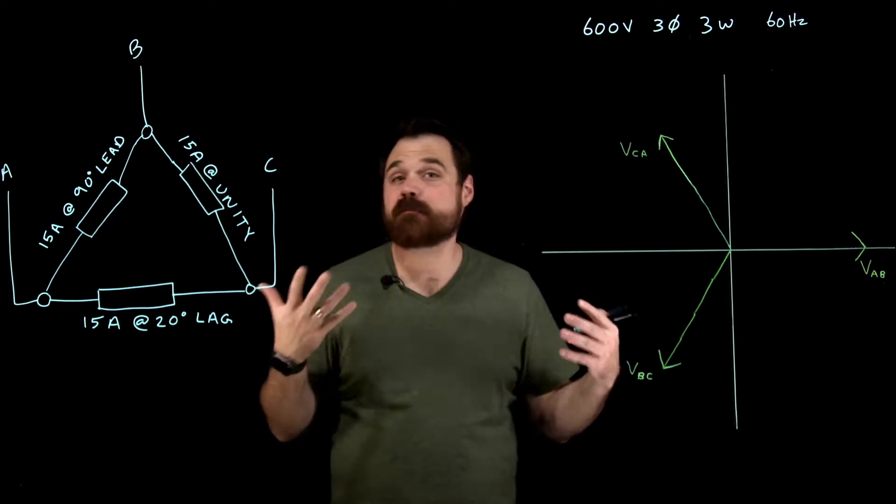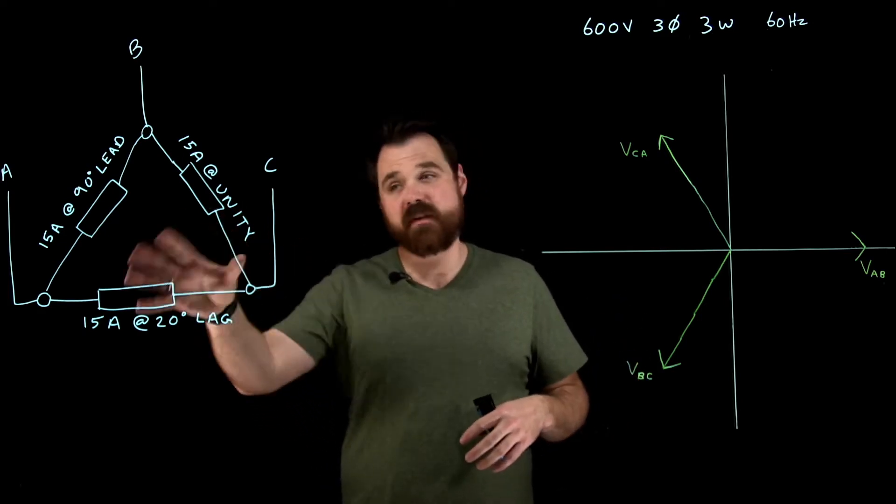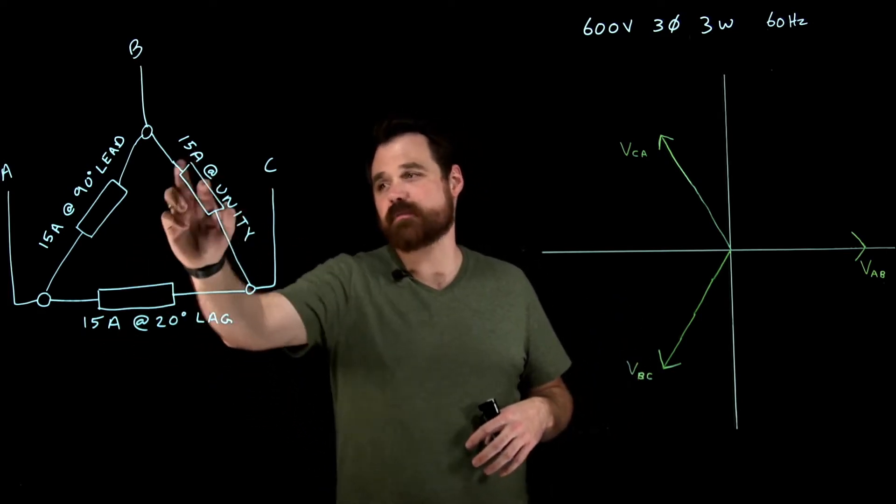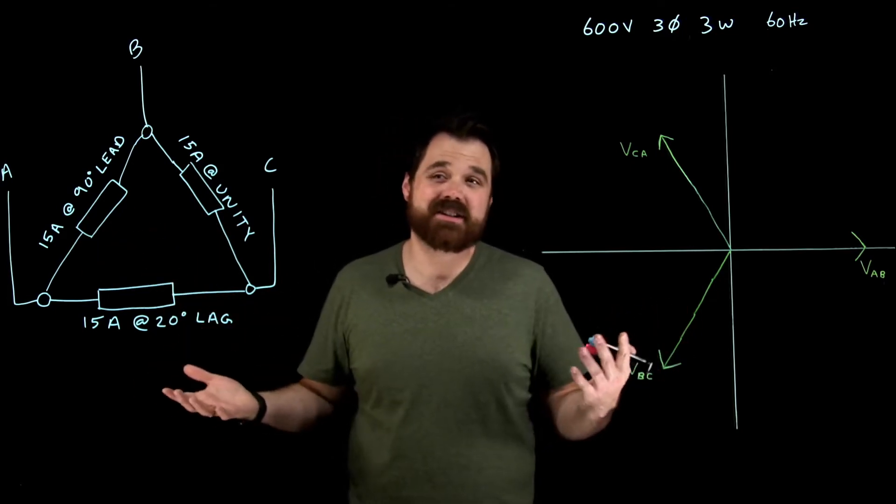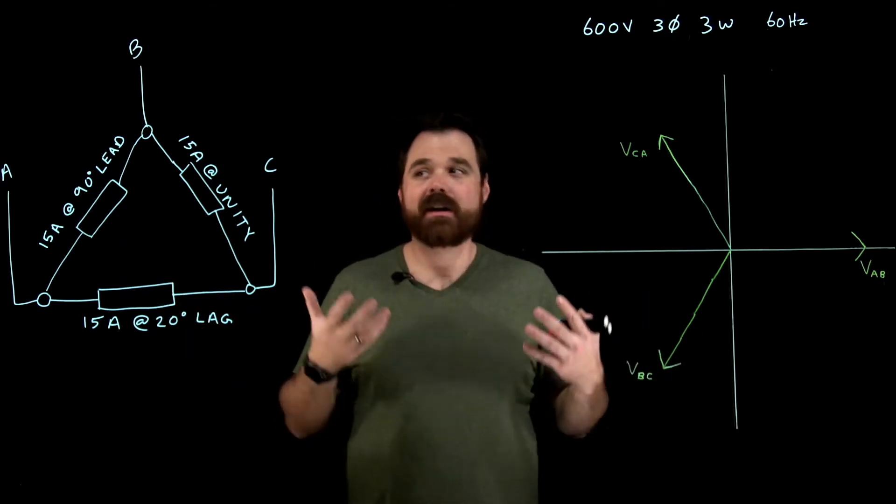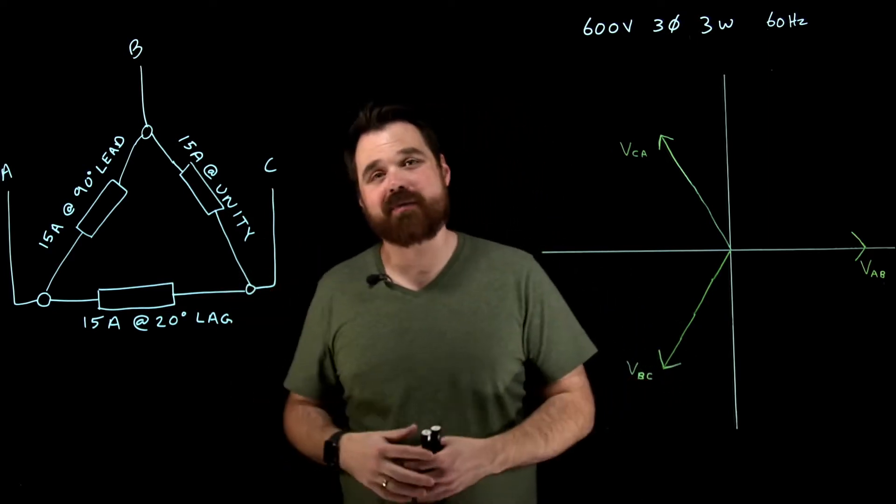And it is an unbalanced circuit. Now we can see in each phase, I've actually got 15 amps, which means the impedance in each phase has to be the same. However, we can see each of them has a different power factor.